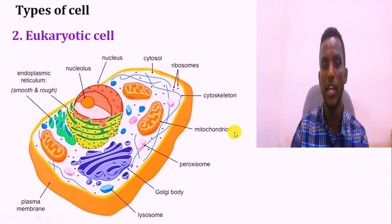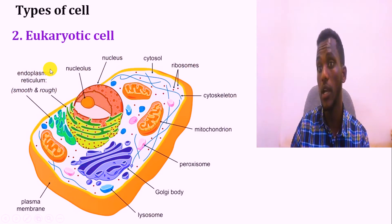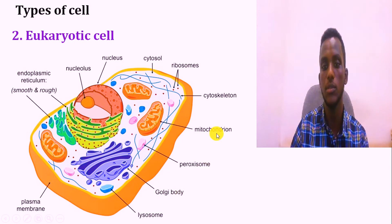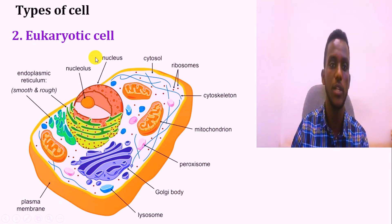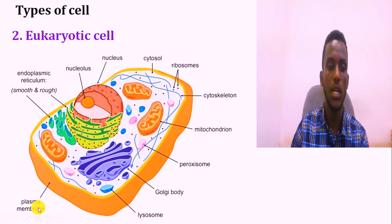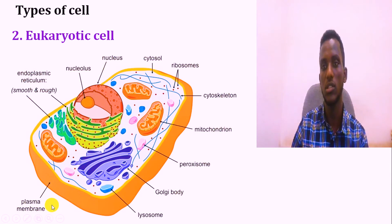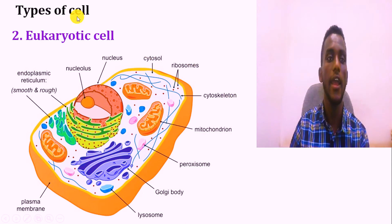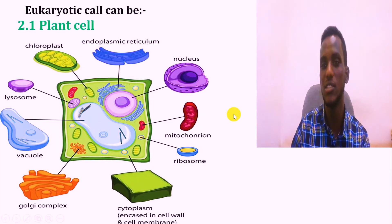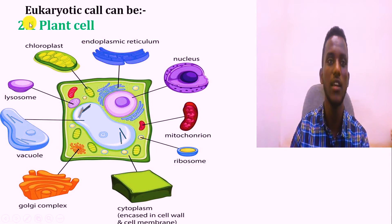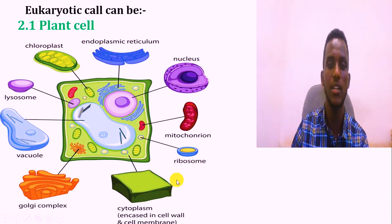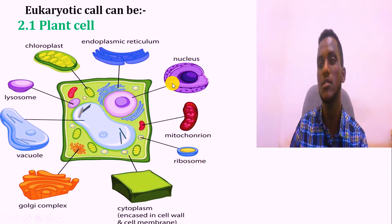This is a representative of the eukaryotic cells. The eukaryotic cell components include: Golgi body, peroxisomes, mitochondria, cytoskeleton, ribosomes, cytoplasm, nucleus, endoplasmic reticulum, as well as the plasma membrane or cell membrane. These organelles are found in plant cells as well as some in animal cells.